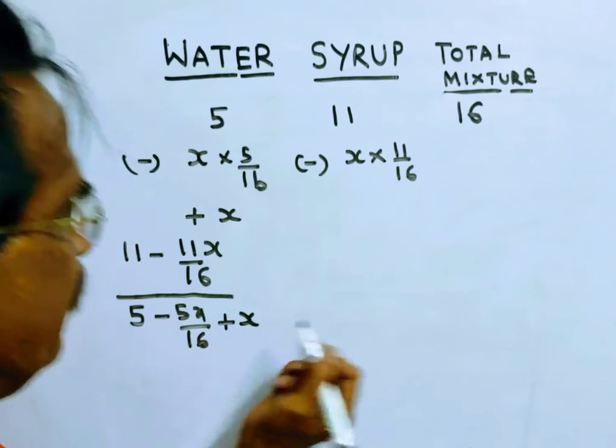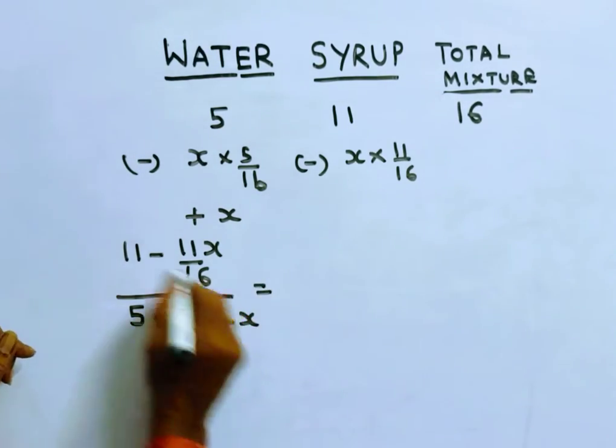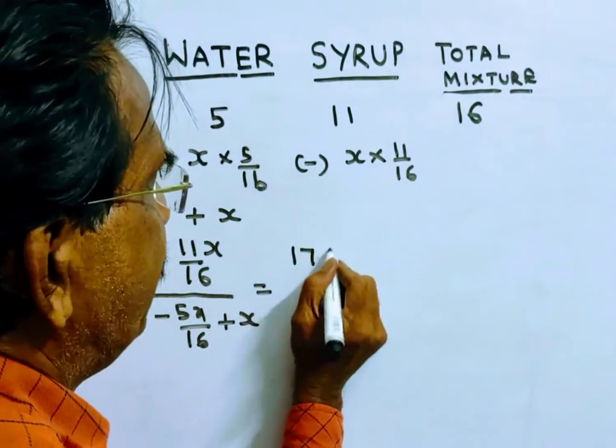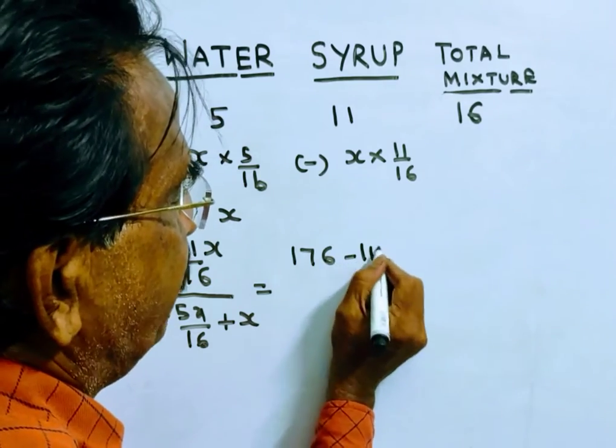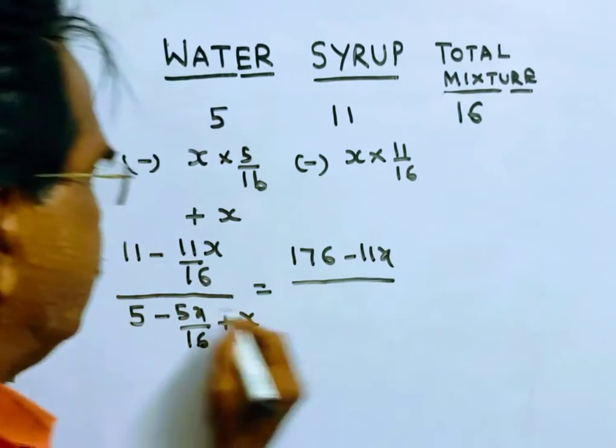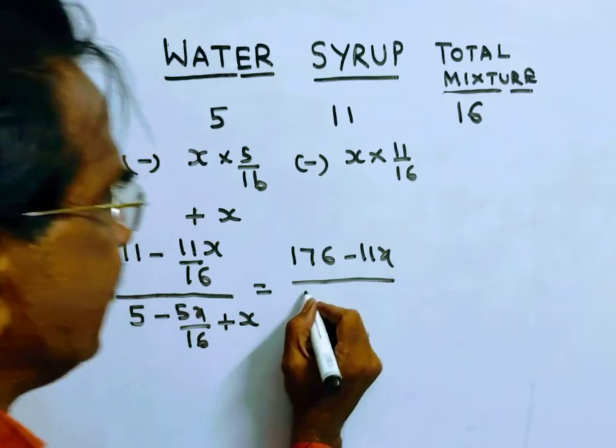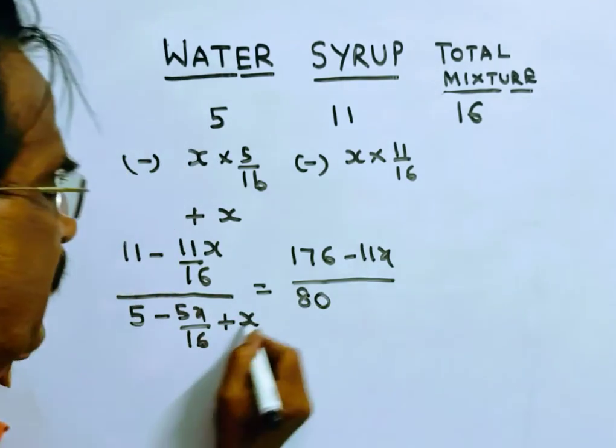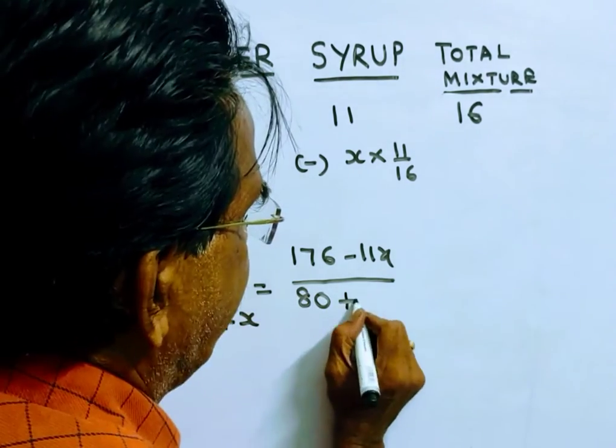And we have added x liters. This is equal to 16, 11x. 176 minus 11x by 16. 16 gets cancelled. 80 plus 16x minus 5 plus 11x.